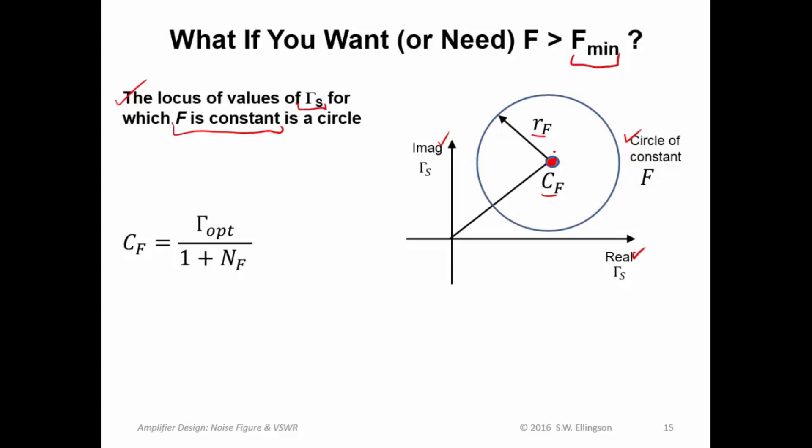The center of that circle is given by gamma_opt over 1 plus N_F. N_F is this thing here, which depends on the minimum noise figure, the normalized resistance, and the optimum source reflection coefficient. So we see that the center of this circle is defined entirely by these parameters: gamma_opt, F_min, the normalized load resistance. And these are things that are normally specified in the data sheets for RF transistors.